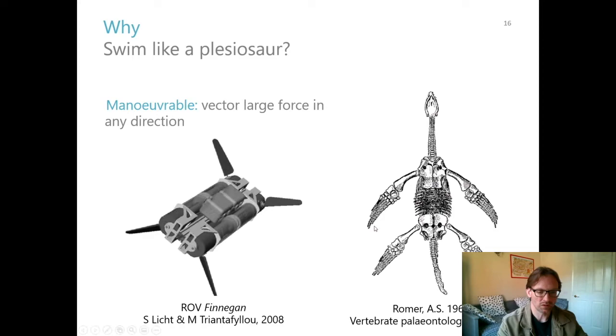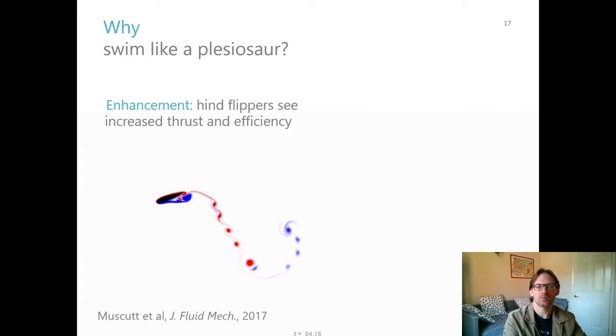So this is a remotely operated vehicle called Finnegan that was developed at MIT in 2008. And that used four flippers for this reason alone, just to try to get the highly maneuverable vehicle.